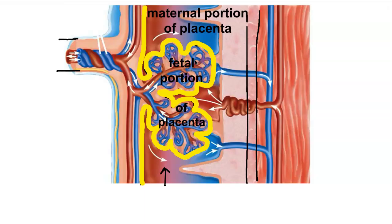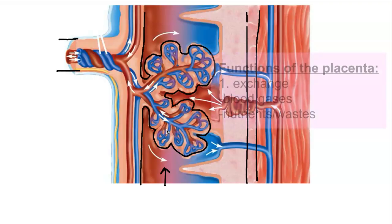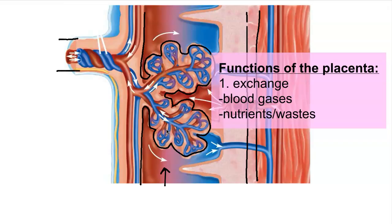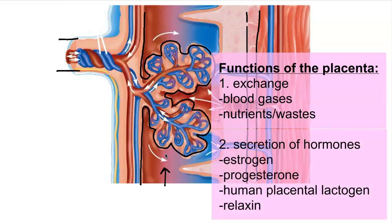The chorionic villi grow into the mother's endometrium but the blood will never mix. The placenta has two main jobs. One is exchange: oxygen diffuses from its area of high pressure into the offspring, and nutrients and waste products are also exchanged — but only individual items, not blood. The other main function is as an endocrine gland: it secretes estrogen and progesterone, as well as human placental lactogen, which causes maturation of the alveolar breast tissue in preparation for milk production. It also produces relaxin, which softens the pubic symphysis.